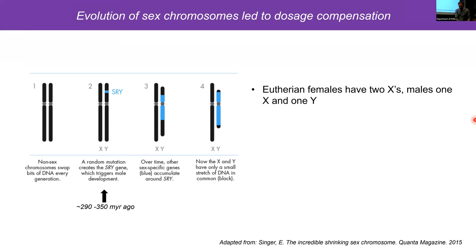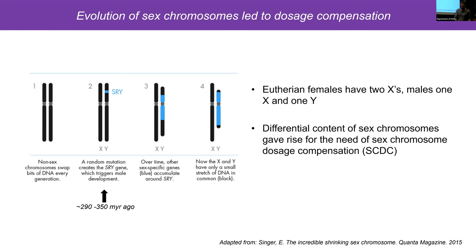Over time, there was an accumulation of sex-specific genes on the future Y, which led to loss of recombination and accumulation of mutations — most of which were eventually lost. What you end up with is a shrinking Y chromosome with mostly different gene content compared to its X partner. The modern X chromosome has about 900 genes versus the Y, which has only about 50 genes. This differential content gave rise to the need to balance gene dosage between sexes — called sex chromosome dosage compensation.